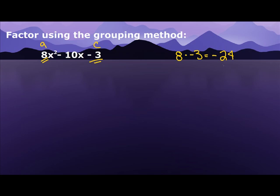So now I have to think of multiples of negative 24. Of course we have 8 times negative 3. But also negative 8 times a positive 3. 6 times negative 4. Negative 6 times a positive 4. 2 times negative 12. And then negative 2 times 12.